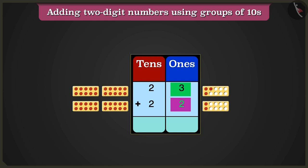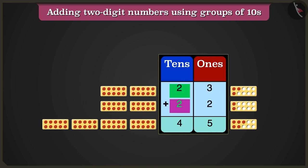3 1s plus 2 1s will equal 5 1s. Come to the box of 10s. 2 10s plus 2 10s will make 4 10s.